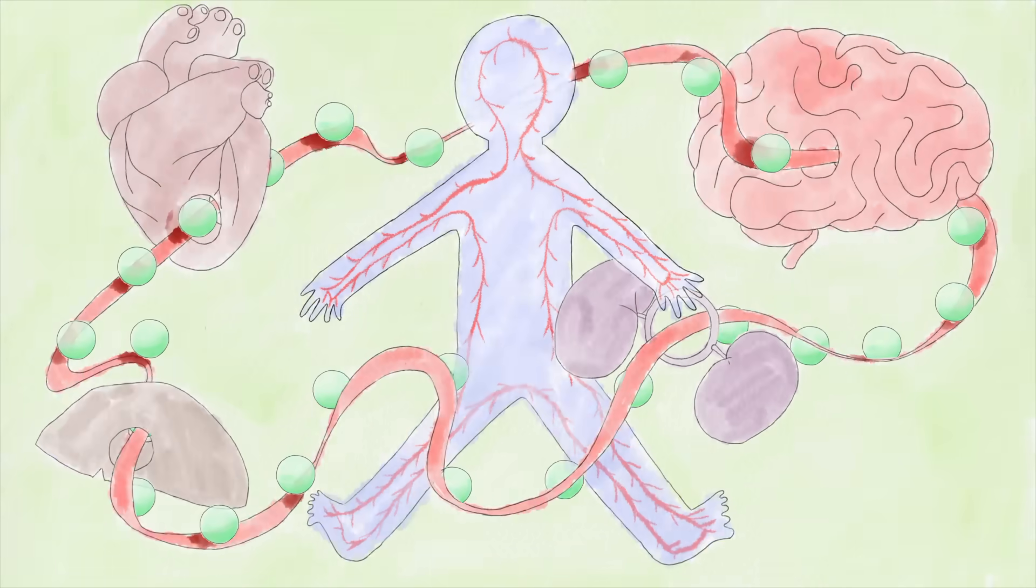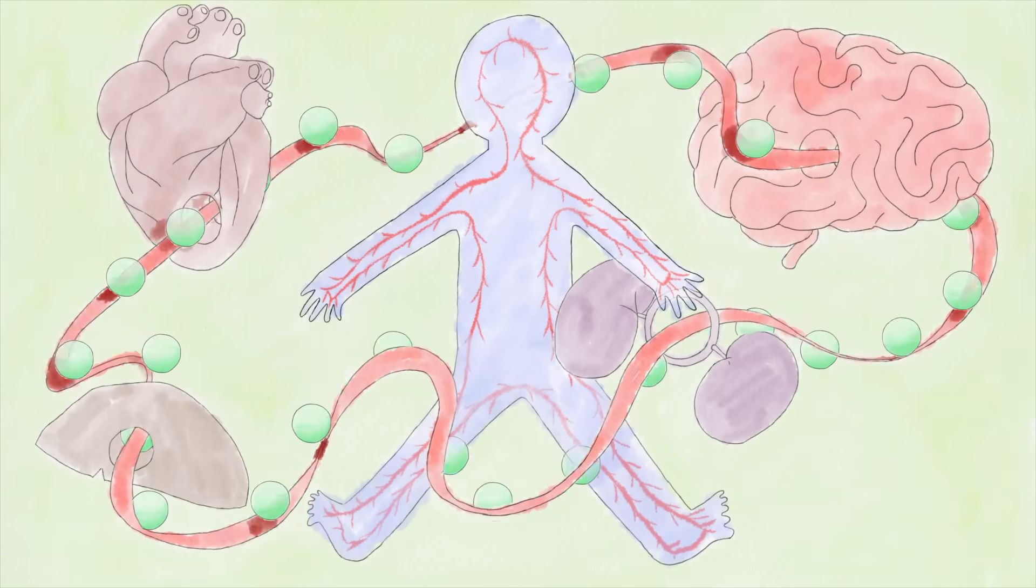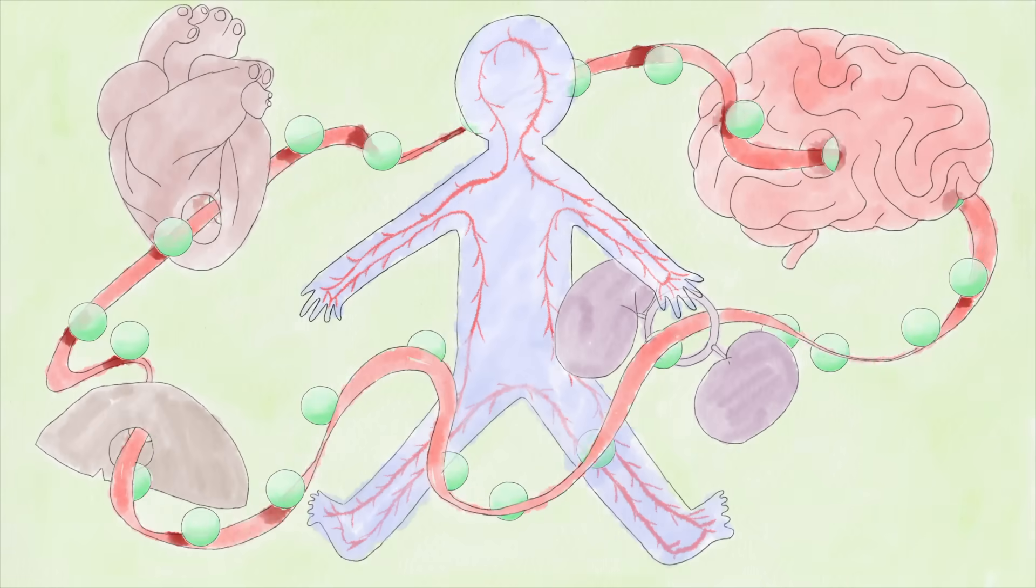This blood loop travels through every limb and organ, including the heart, brain, kidneys, and back through the liver. When ibuprofen molecules encounter a location where the body's pain response is in full swing, they bind to specific target molecules that are part of that reaction.